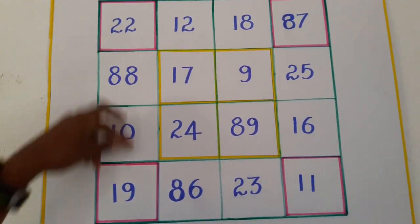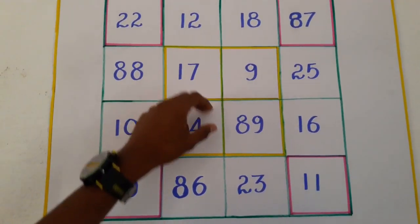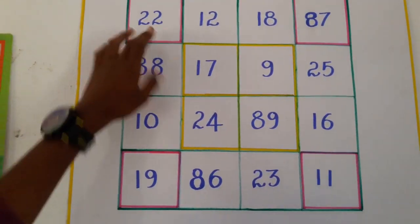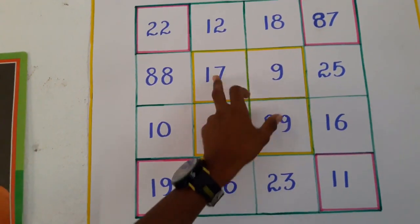The total of this row is 139. The total of the corners is 139, and the center is also 139.